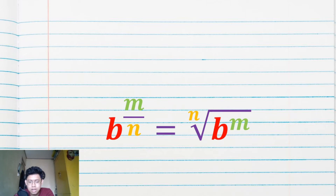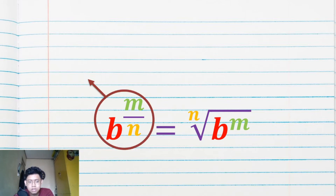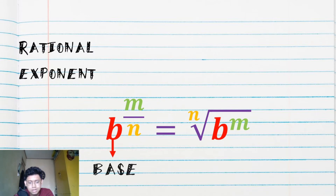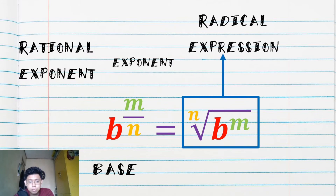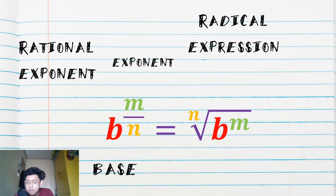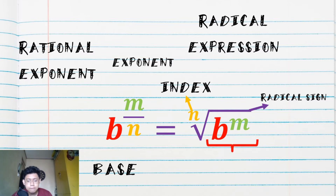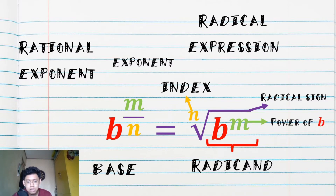If you have a rational exponent, you will automatically have a radical expression. In a rational exponent we have the base and the exponent, which is in fraction form. In a radical expression we have the radical sign, the index, and the radicand — the one inside the radical symbol.